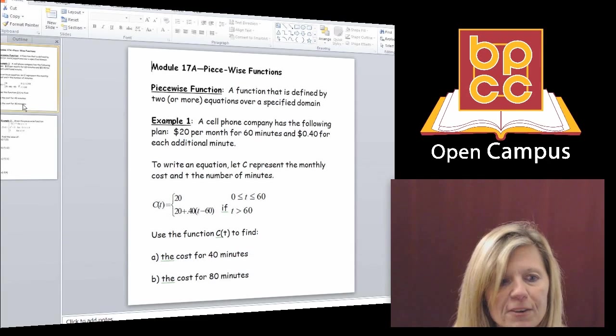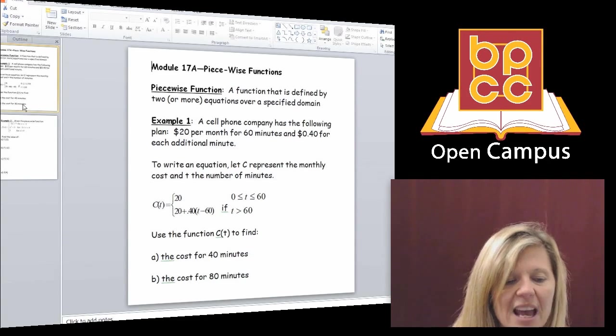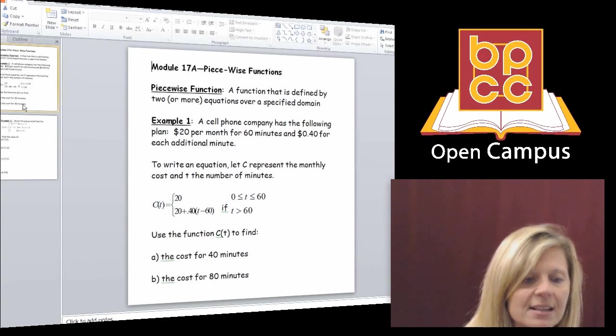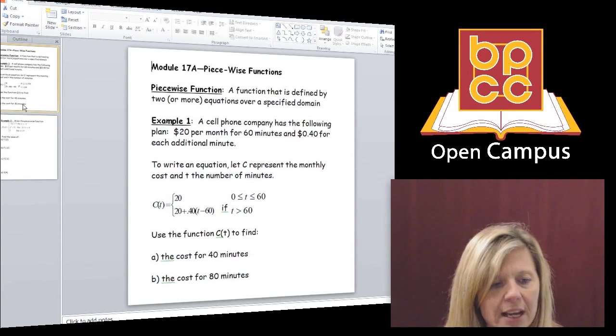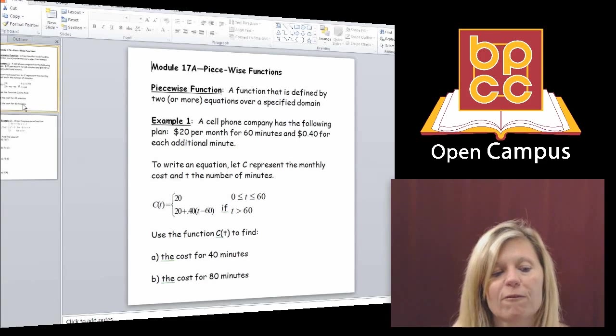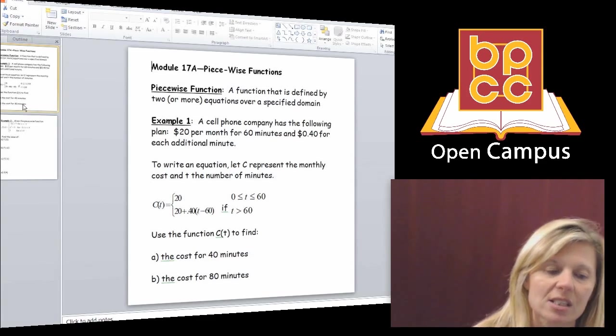Now remember, our famous function notation is f of x, and we're used to seeing like f of x equals 3x plus 5, f of x equals negative x squared plus 6. We're used to seeing one equation, one equal sign with our function notation. Well, with a piecewise function, you will not just see one equation.